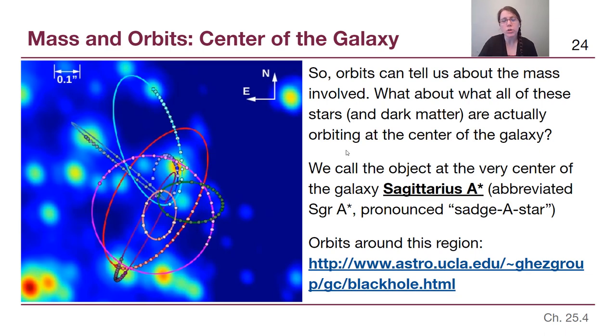When we zoom in real close on the center of our galaxy, we can't use visible light because there are huge amounts of dust clouds between us and the center. But when we use radio wavelengths and other long wavelengths that can peer through the dust, we see objects orbiting something at the very center. The object at the very center of the galaxy gets the name Sagittarius A star.